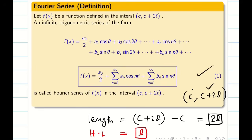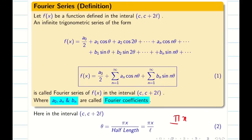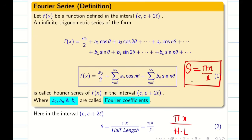Now the question arises: what is theta? Theta is nothing but pi x divided by your half length l in general. So I can replace theta by pi x by l. The terms a naught, a n, and b n are called Fourier coefficients. We are going to see how to find a naught, a n, and b n in the forecoming slides.